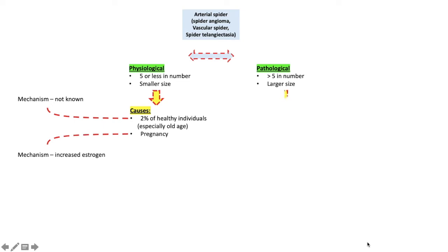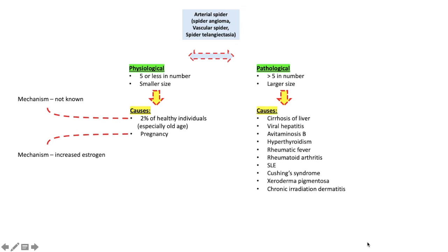Causes of pathological spider? Here is a big list of causes: cirrhosis of liver, viral hepatitis, avitaminosis B, hyperthyroidism, rheumatic fever, rheumatoid arthritis, SLE, Cushing syndrome, xeroderma pigmentosa, chronic irradiation dermatitis.